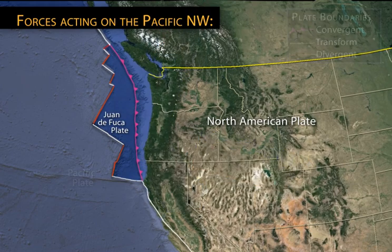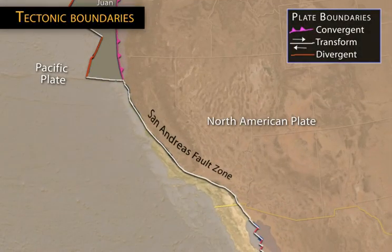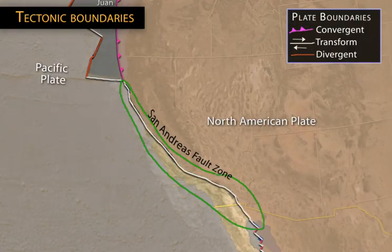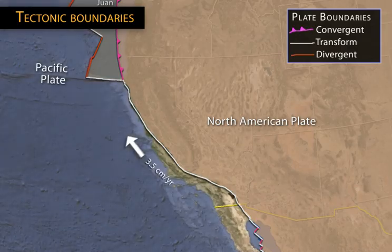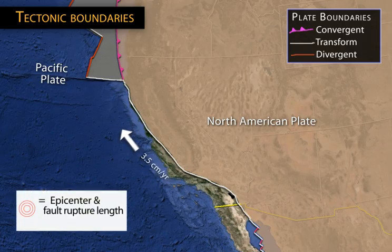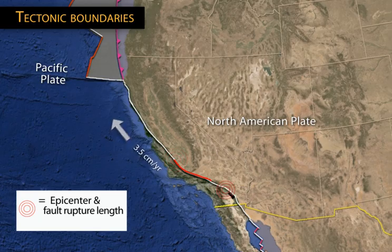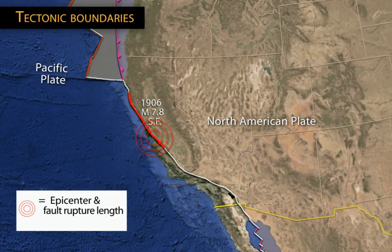We begin by looking at Western North America's active plate boundaries. The San Andreas Fault is a strike-slip transform fault zone along which the Pacific Plate is sliding northwest at about 3.5 centimeters per year with respect to interior North America. The Pacific Plate drags on that plate margin and segments of the boundary rupture sporadically, releasing moderate to large earthquakes. The most famous was the 1906 magnitude 7.8 San Francisco earthquake, a 480 kilometer long rupture.